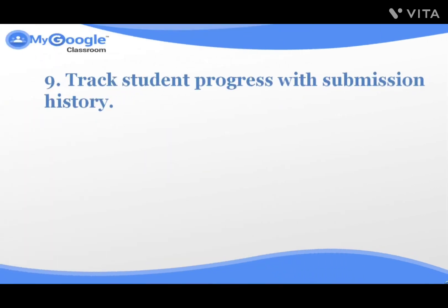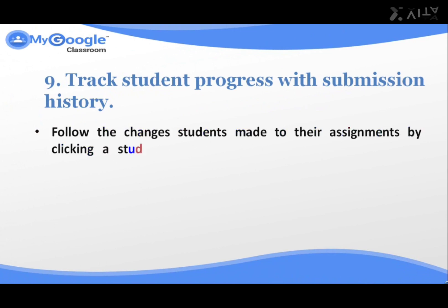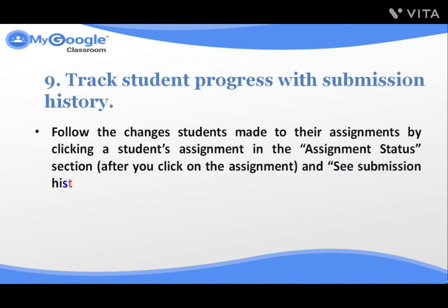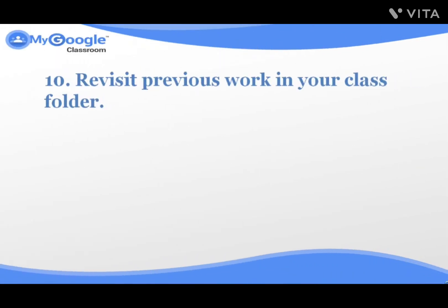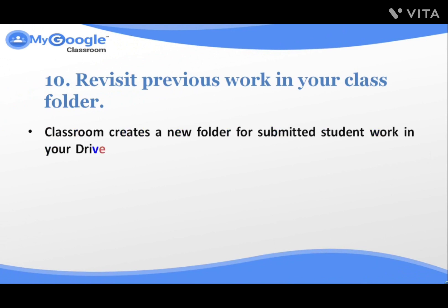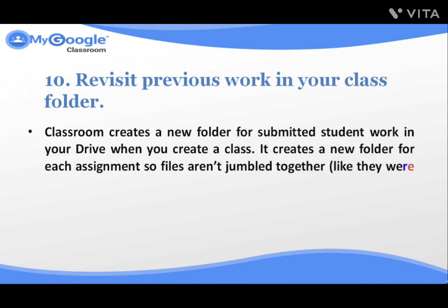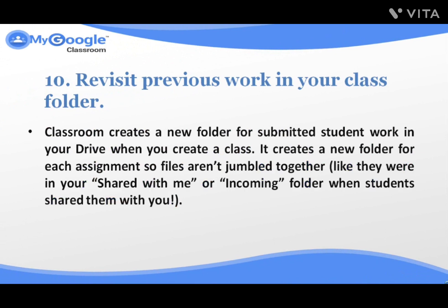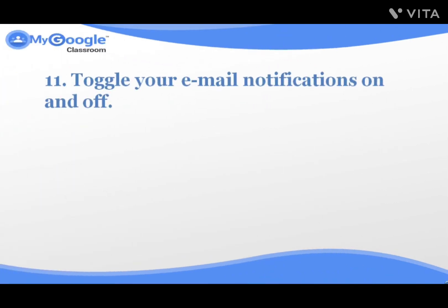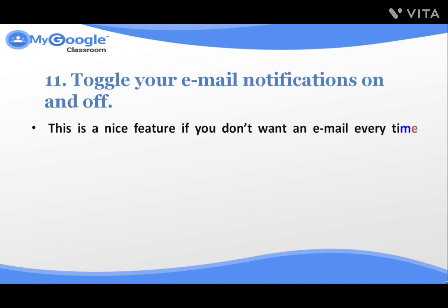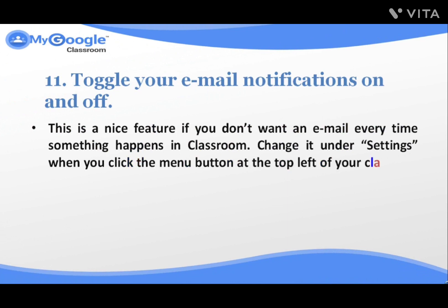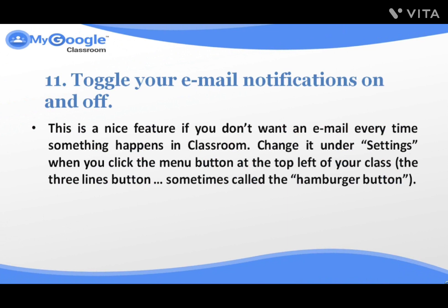Number eight: Provide a collaborative space for students to work. Distribute a place for collaborative class notes — create a presentation and give everyone a slide as their own space to work on a class activity. If you create files that everyone can work in, teamwork takes place online. Number nine: Track student progress with submission history. Follow the changes students made to their assignments by clicking a student's assignment in the assignment status section and viewing submission history. Number ten: Revisit previous work in your class folder. Classroom creates a new folder for submitted student work in your Drive — when you create a class, it creates a new folder for each assignment so files aren't jumbled together. Number eleven: Toggle your email notifications on and off. Change it under settings when you click the menu button — the three-line button, sometimes called the hamburger button — at the top left of your class.